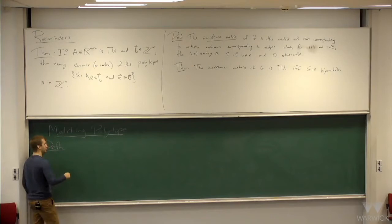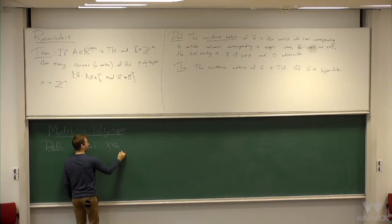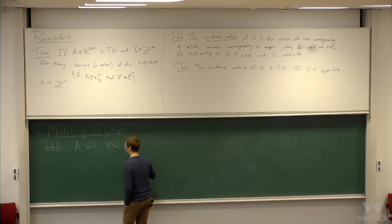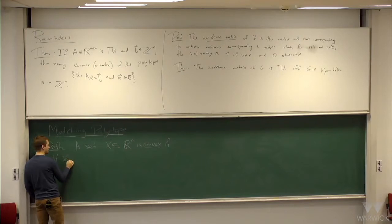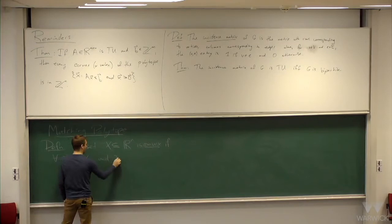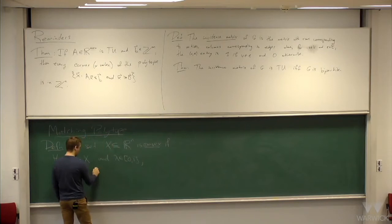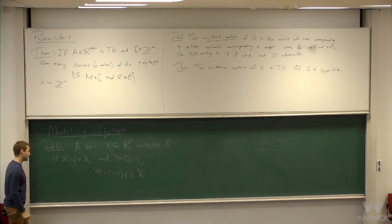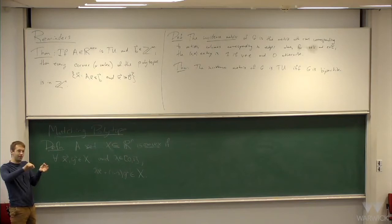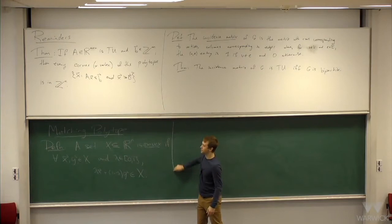The first definition was given earlier in the module, but just as a reminder: a set x in R^n is convex if whenever you take two elements x and y and take lambda between 0 and 1, the convex combination lambda x plus (1 minus lambda) y is in x. Basically, if you take two points in x and look at the line segment joining them, then all points on that line segment are also inside x. You may have seen this in analysis or calculus.